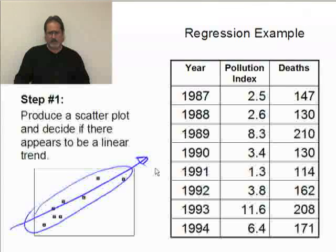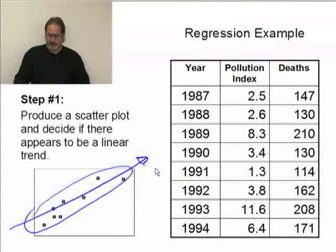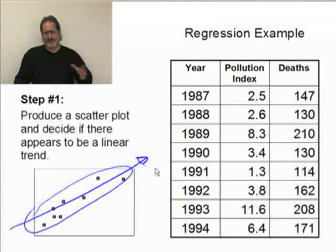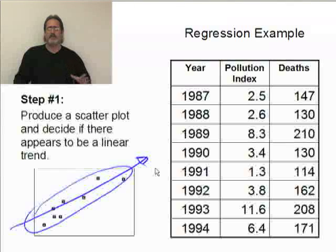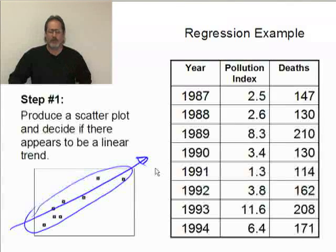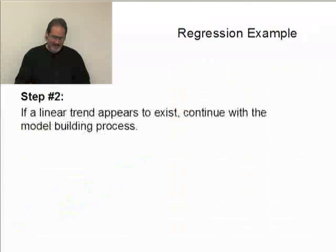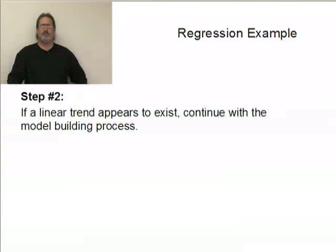When we look at the assumptions, and we will address all the assumptions needed for regression, we may decide whether at that point it was or was not a proper thing to do. If we decide that a linear trend appears to exist, then we want to go ahead and continue with the model building process. In terms of the calculator, the model building process is the exact same thing that we did for correlation, but this time we will be looking for a little bit different information.